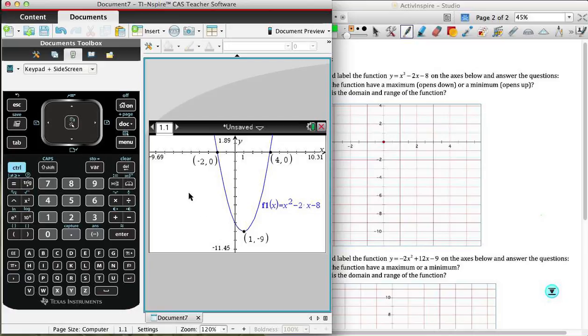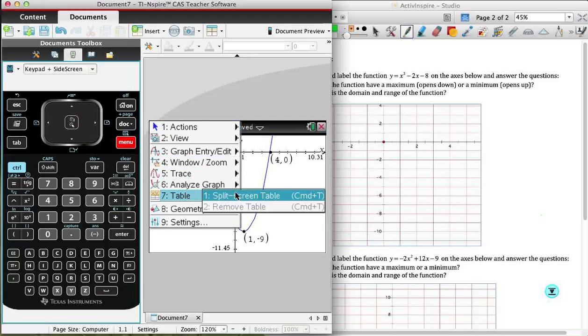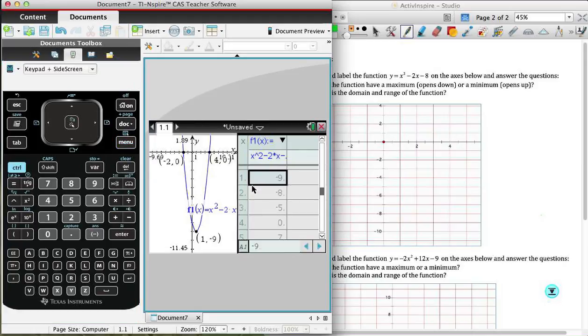There's a couple of different ways that we can do this. The one is using the table function. And so we can have the calculator show us a table of values. And really what we're looking for in the table of values is the value when x equals 0. So when x equals 0, that will give us the y-intercept because of course along the y-axis is where x equals 0. Now that can also be obtained from the equation. But I'll just show you on the calculator. And so if we come in to the analyze graph and look at table, one of the options is a split-screen table. So I'm going to select that option right now.